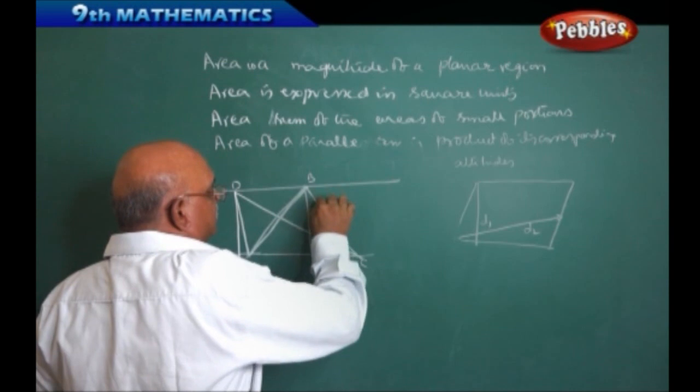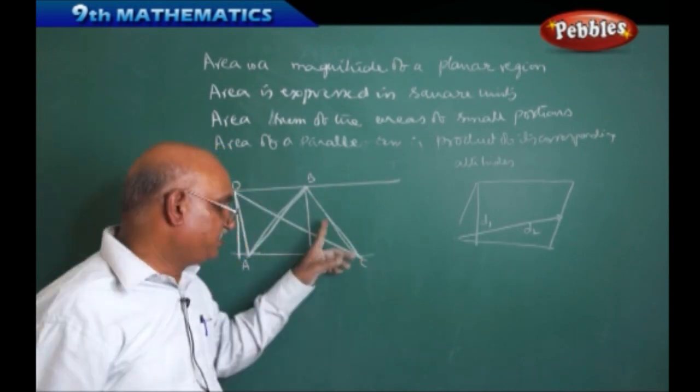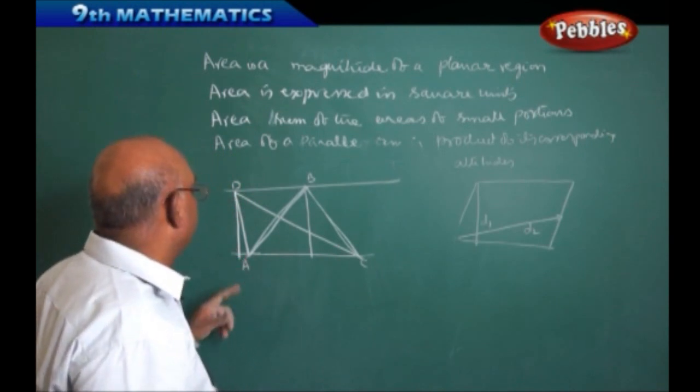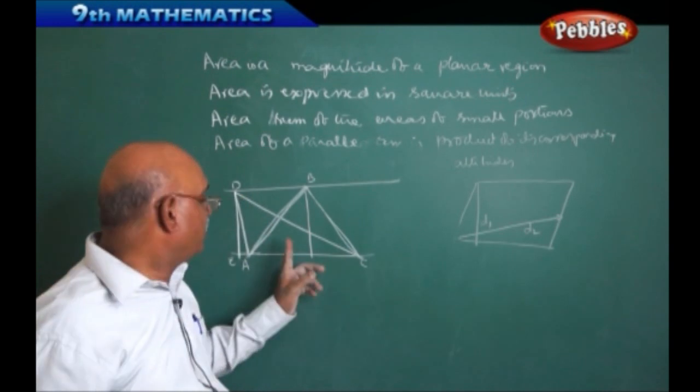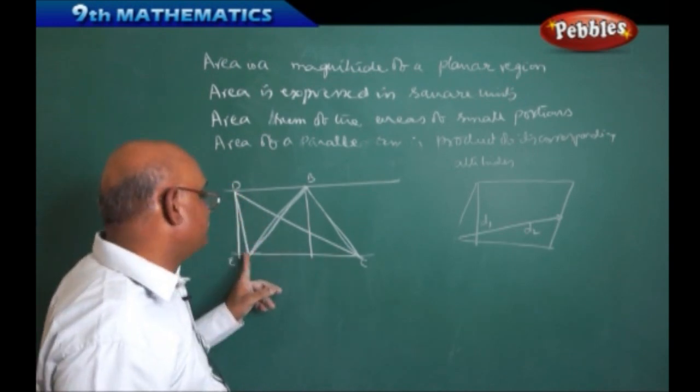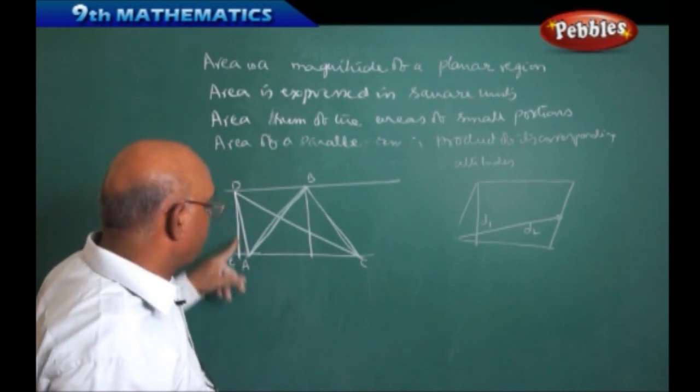Area of this triangle is equal to half into AC base into height. The same area of another triangle, ADC, half into the base AC into height is going to be the DE.